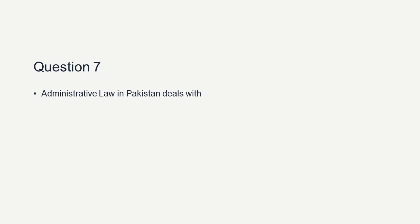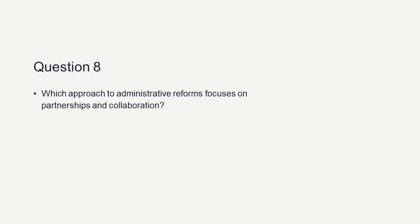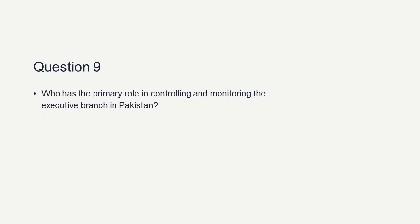Administrative law in Pakistan deals with government actions and procedures. Question 7: Which approach to administrative reforms focuses on partnerships and collaboration? Governance approach. Question 8: Who has the primary role in controlling and monitoring the executive branch in Pakistan? Parliament.